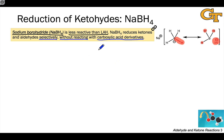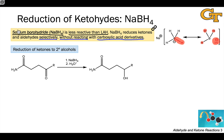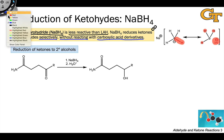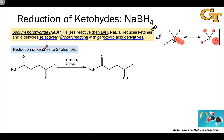Heteroatom-substituted carbonyl groups and carboxylic acid derivatives are harder to reduce, for reasons we'll revisit in a second. So for example, sodium borohydride can be applied for the reduction of ketones to secondary alcohols, and this reaction works much like the lithium aluminum hydride reaction does.